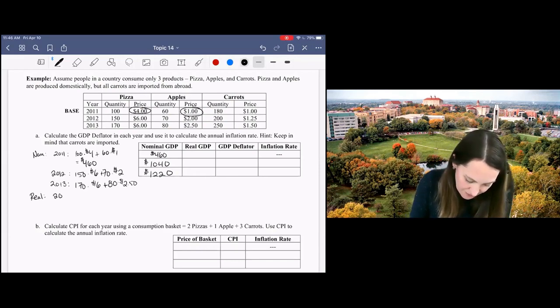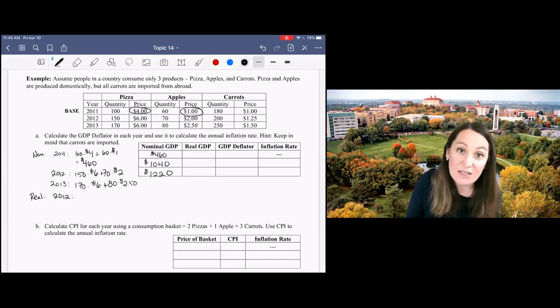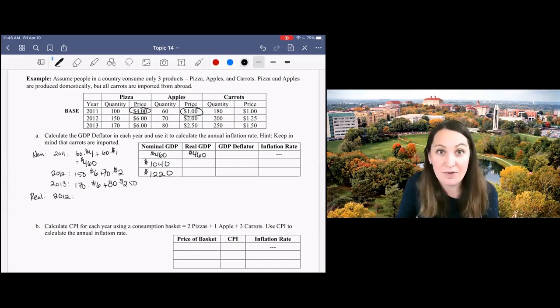For real GDP we don't need to redo this calculation for the base year 2011 because we're using the same prices and quantities as we did for nominal GDP, and that will still be $460.